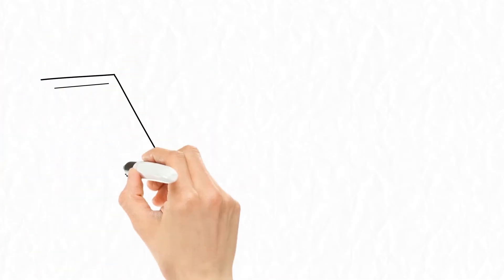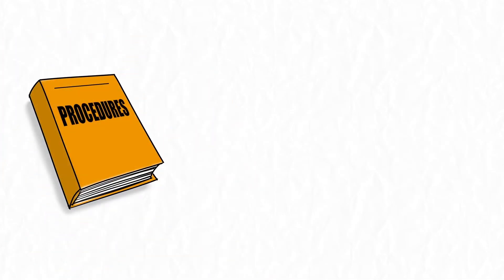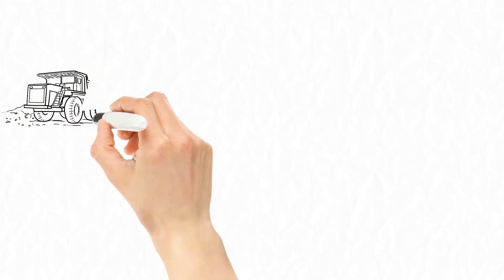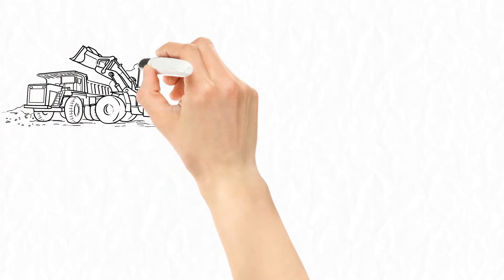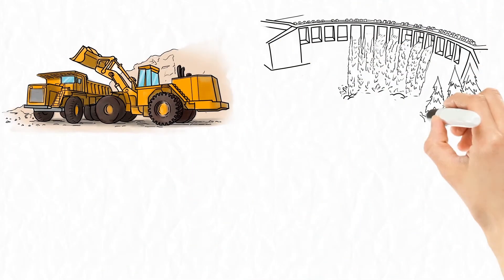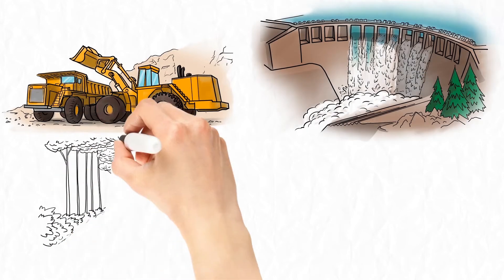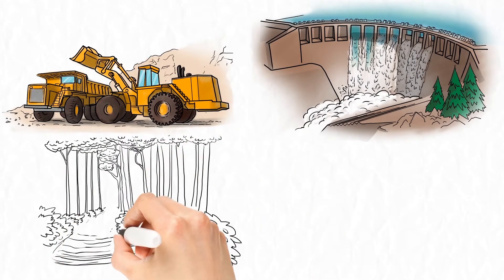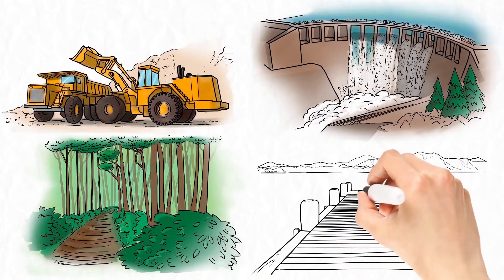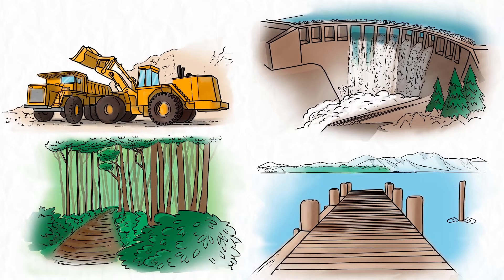The procedures document that accompanies the policy contains all of the principles and considerations for how to use the policy to guide mitigation planning for a project. Though it was developed for large projects like mines and hydropower, the Environmental Mitigation Policy can also apply to smaller projects that may impact the environment, such as building a trail to a dock in a riparian area.